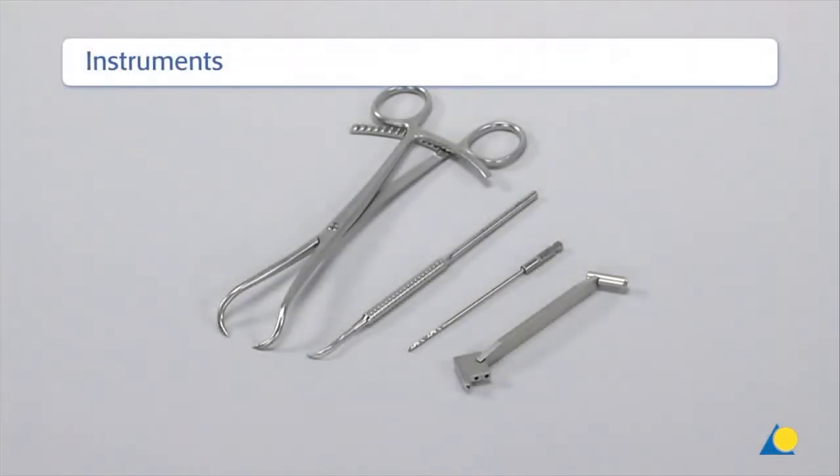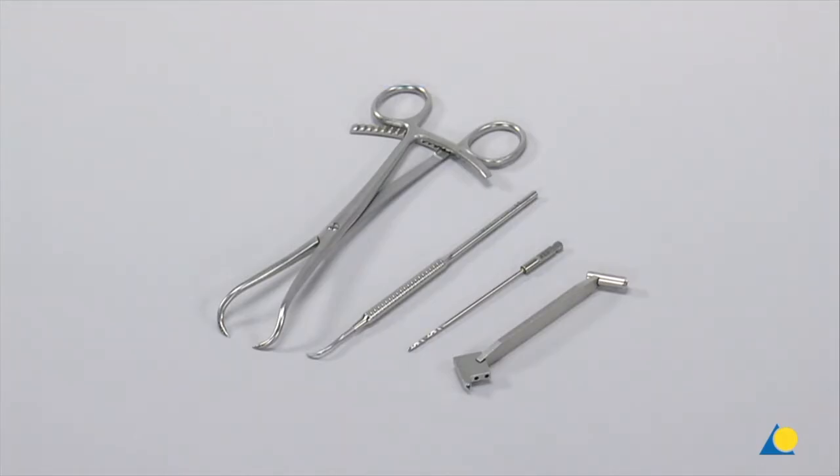The instruments used are from left to right, the large pointed reduction forceps, the sharp hook, the 2mm drill bit, and the 2.0 triple drill guide.